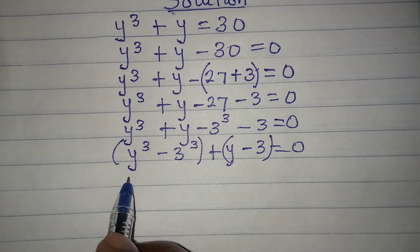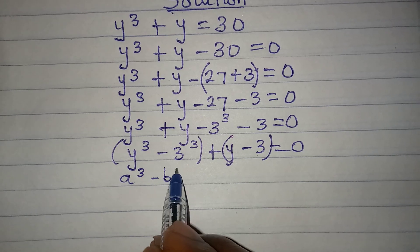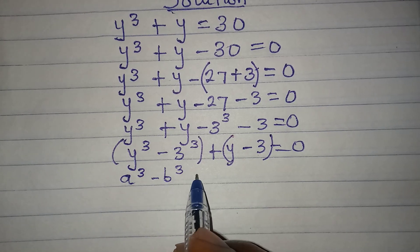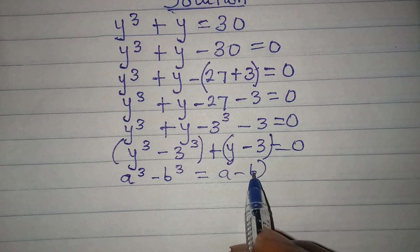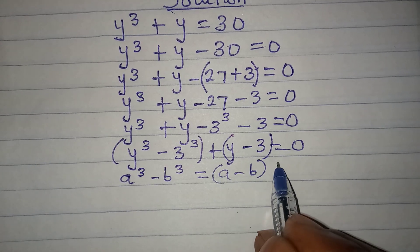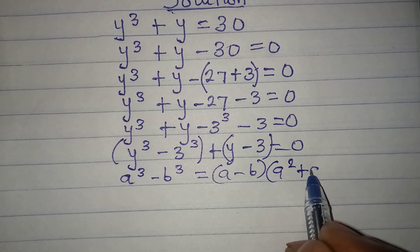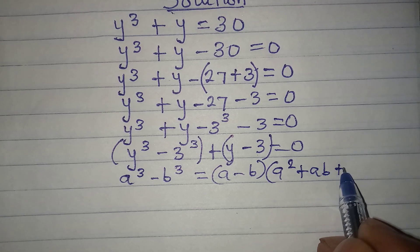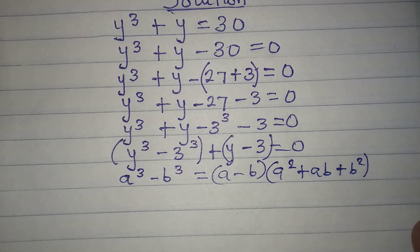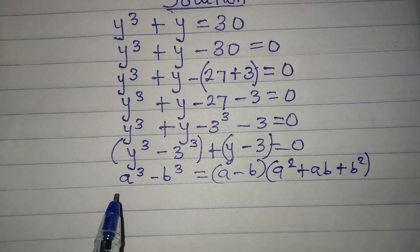Let's follow the standard formula: a to the power of 3 minus b to the power of 3 equals a minus b, times a squared plus ab plus b squared. I'm going to apply this same formula here.